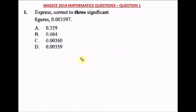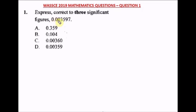Let us get on to the video now. Question one of the WAEC 2019 mathematics past question. It says express correct to three significant figures: 0.003597. In three significant figures, we start counting from when the digit starts. If it was decimal places it's from your decimal point, but for significant figures, wherever our value starts is where we start counting. The zeros here are non-values.